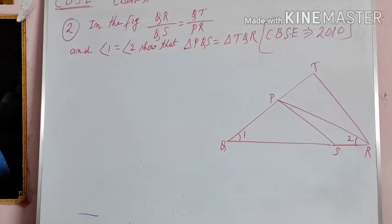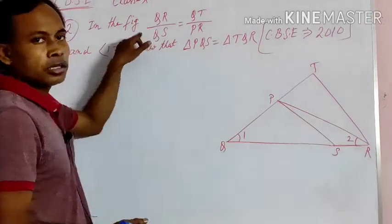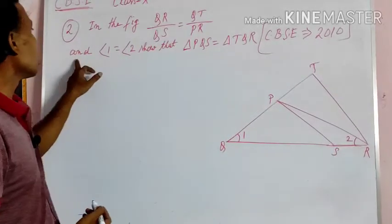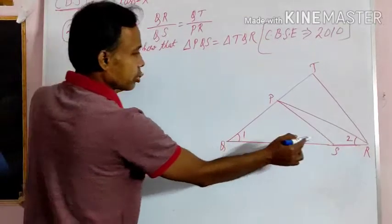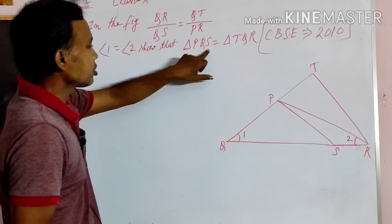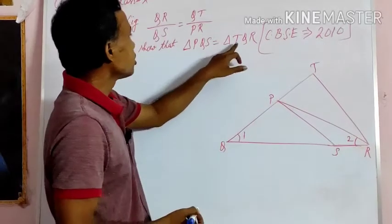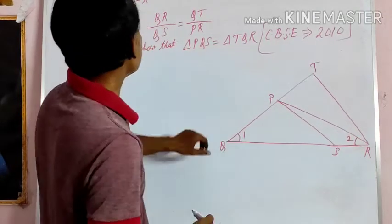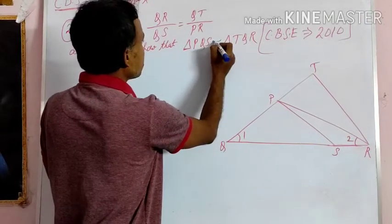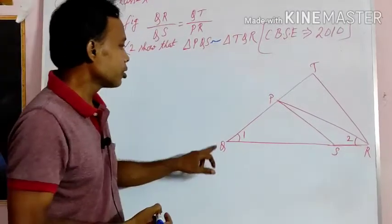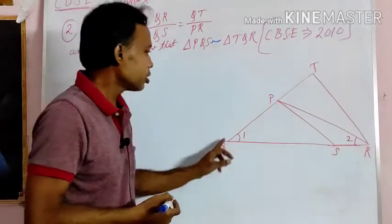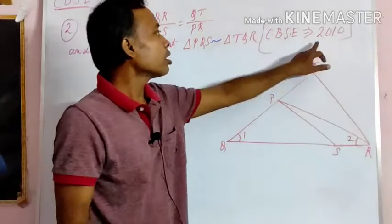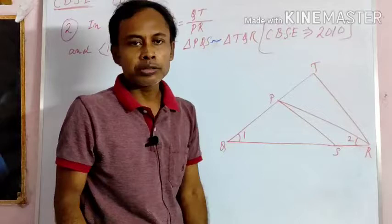CBSE Class 10, question number 2. In the figure, QR by QS is equal to QT by PR, and angle 1 is equal to angle 2. We have to prove that triangle PQS and triangle TQR are similar. This is a very important question that has come from CBSE in the year 2010. Let us solve it.